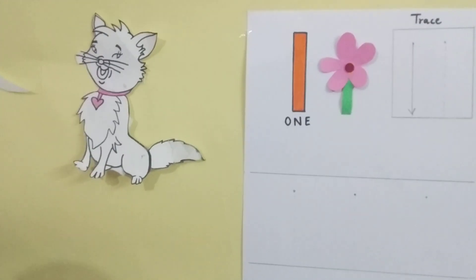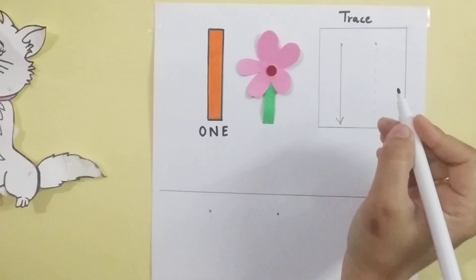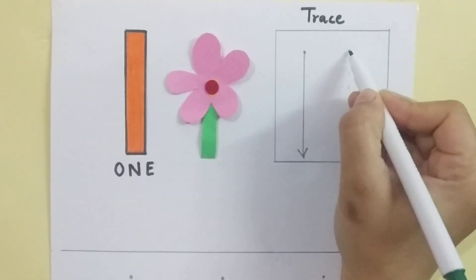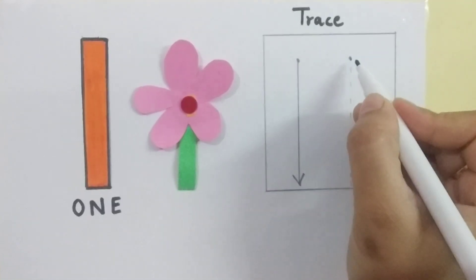Now, we will see how to write number 1. Now, look here. Can you see this dot? We will make a standing line starting from top.